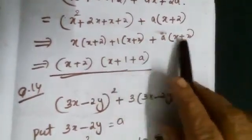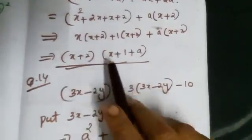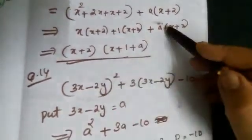So x+2 is a common factor in this. Therefore, (x+2)(x+1+a).